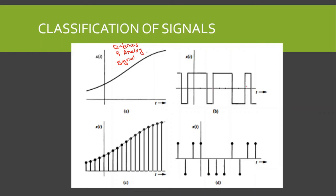Moving to signal B, the time is again continuous, so this is a continuous time signal. Now looking at the amplitude, it has only two values — a finite number of values on the amplitude axis. Therefore, signal B is a continuous and digital signal.